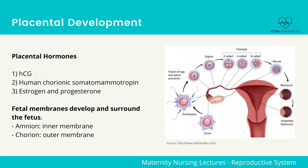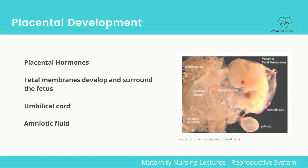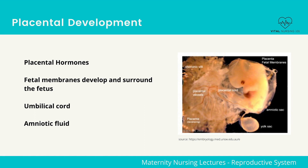The umbilical cord has two arteries that carry deoxygenated blood to the placenta, and one vein that carries oxygenated blood to the fetus. This is an important concept to know for exams.